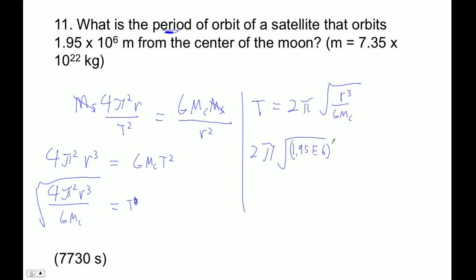Raise that to the third power. And then divide by 6.67 e minus 11. I'm using calculator notation here for no apparently good reason. And then the mass of the moon is 7.35 e22.